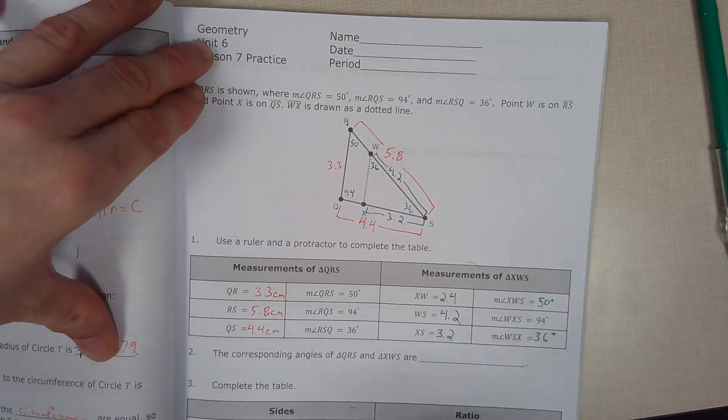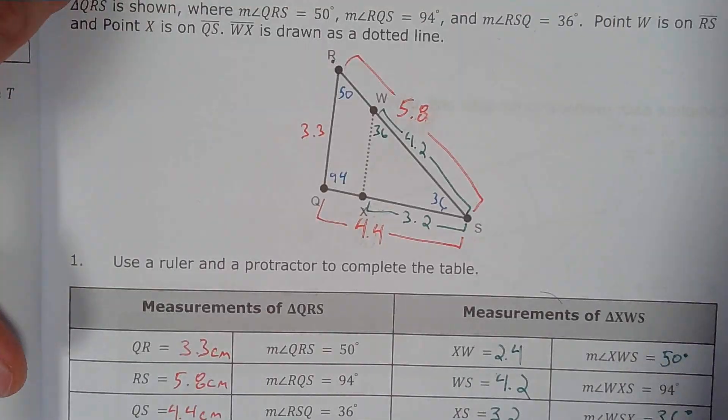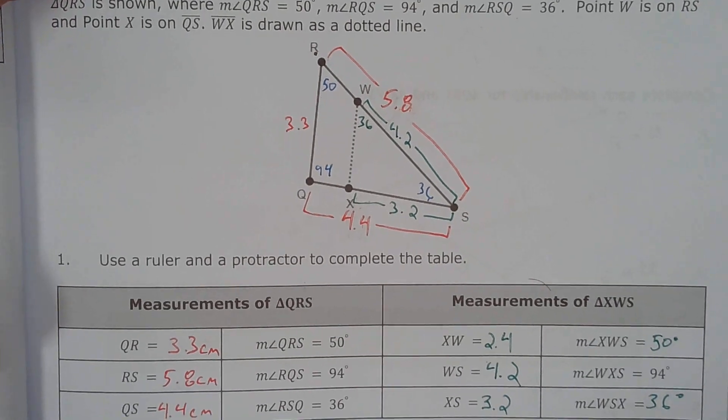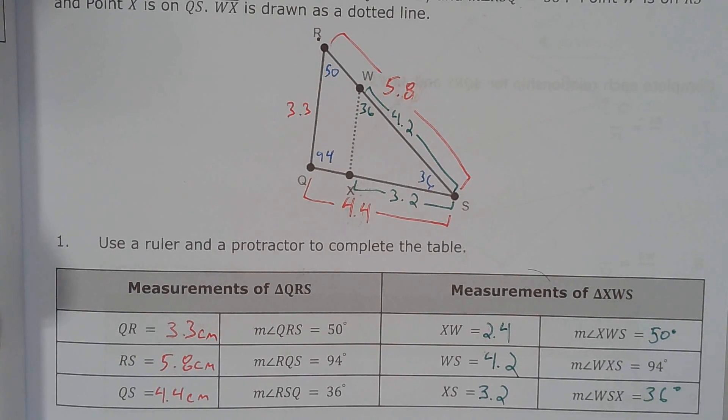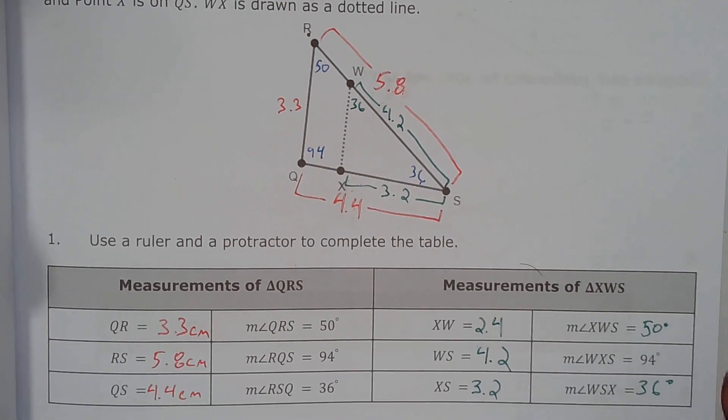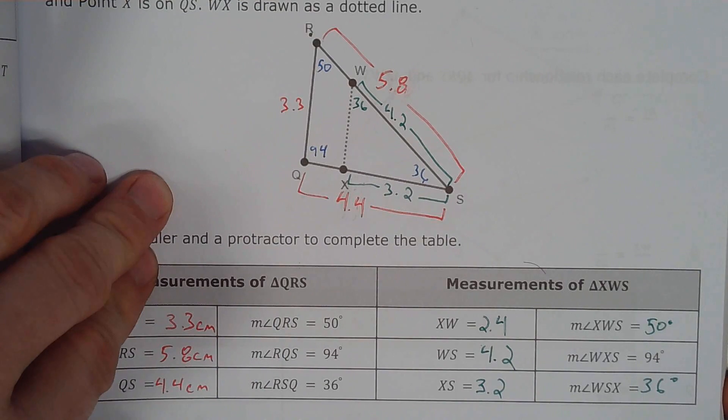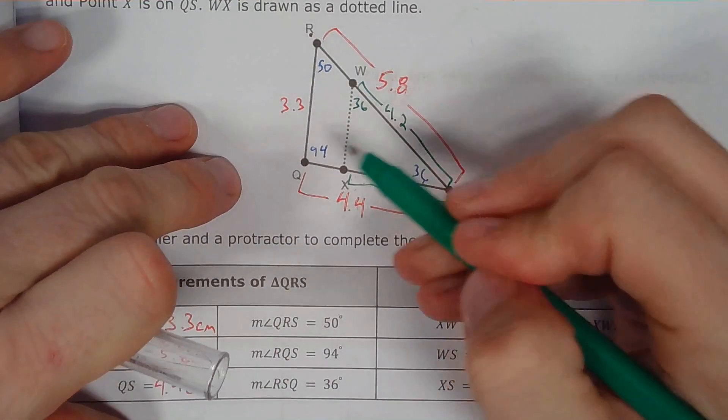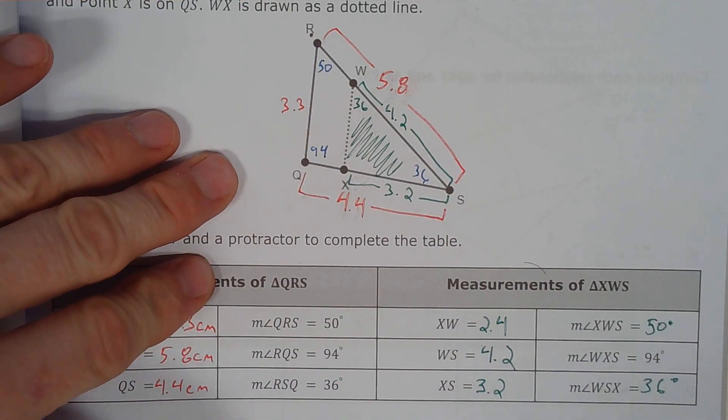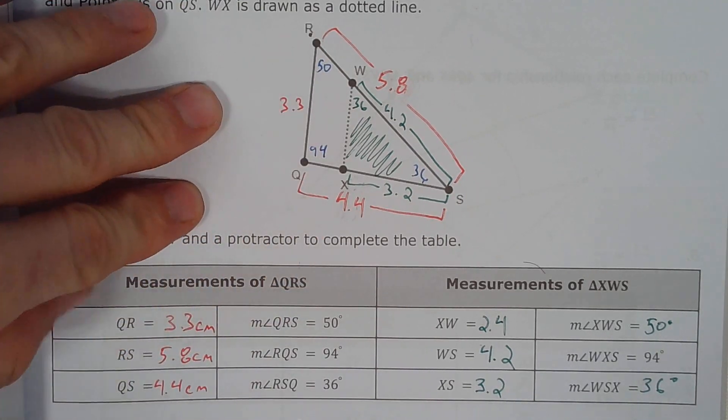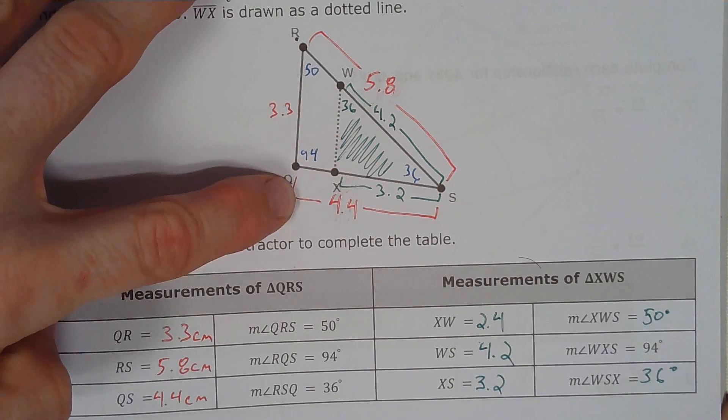Okay, so I'm working on section unit six practice lesson number seven. I've already filled out the table with all the measurements just to save a little bit of time. I also labeled the triangle with the measurements that I got, color-coded and everything. The green triangle is this one and the red triangle is the bigger one that I didn't mark.